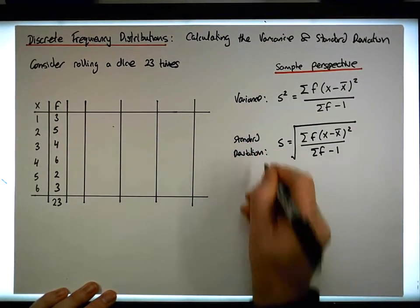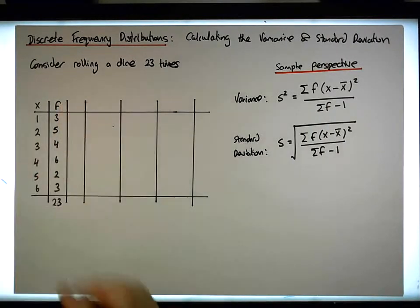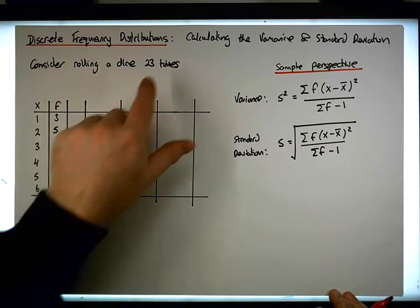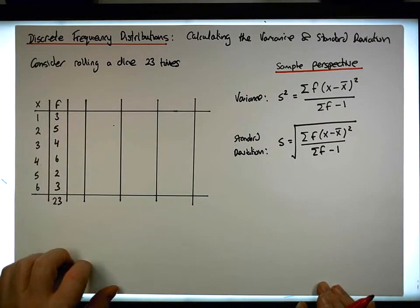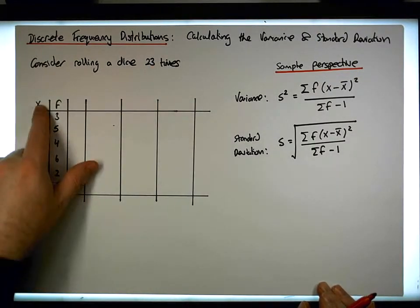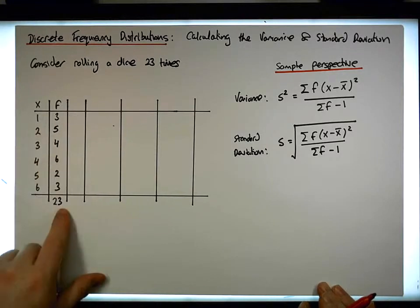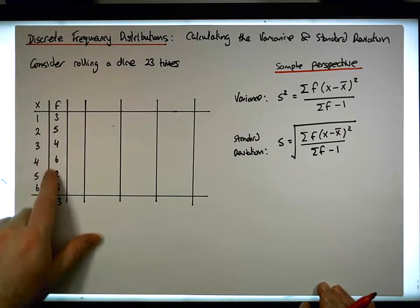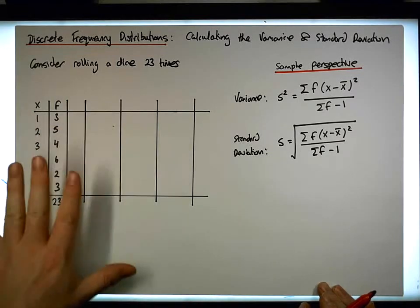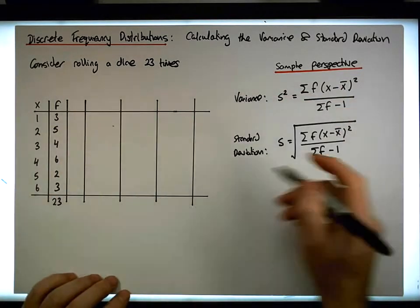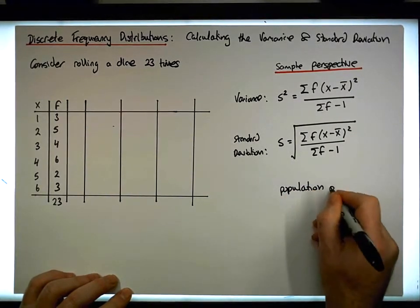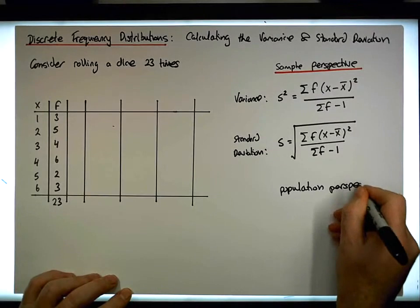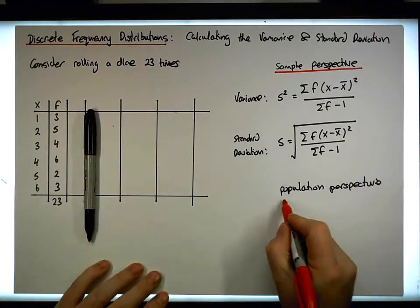So that's in the sample case. Now, if this was population data, in other words, if we knew the full characteristics of the die, say the die is loaded a certain way, and we know that out of 23 rolls that these particular proportions are going to occur, well then we could assume it to be population data. But in this case, we're assuming it to be sample. But from a population perspective, we can also calculate the variance and standard deviation.